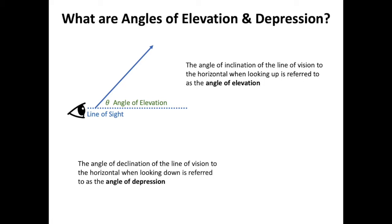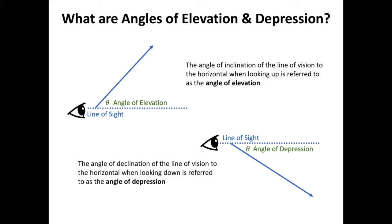The angle of depression is the opposite — it is the angle of inclination of the line of vision to a horizontal point that is below your line of sight. You start with your line of sight, and this time you are up high and looking down to a point that is below you. The angle formed from your line of sight when looking down is the angle of depression. Remember: if you're looking up, it's angle of elevation; if you're looking down, it's angle of depression.